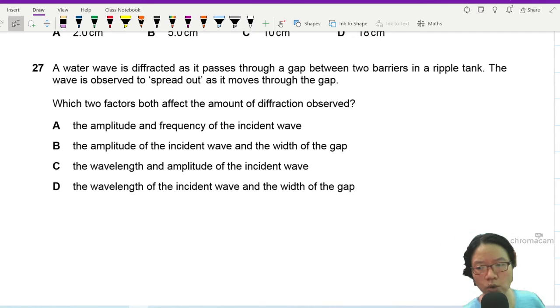Question 27. A water wave is diffracted as it passes through a gap between two barriers in a ripple tank.